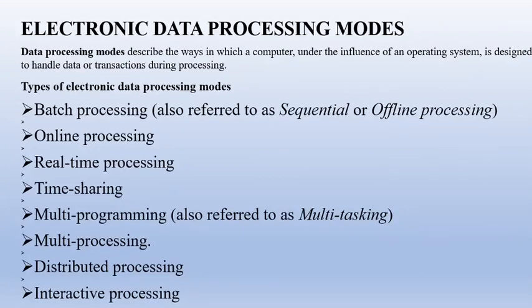Electronic data processing modes describe the way in which a computer, under the influence of an operating system, is designed to handle data or transactions during processing. The types of electronic data processing modes include: batch processing (also called offline or sequential processing), online processing, real-time processing, time sharing, multiprogramming (also called multitasking), multiprocessing, distributed processing, and interactive processing.